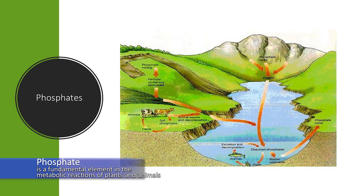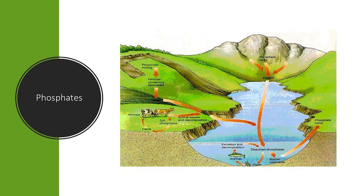Phosphate is a nutrient needed for plant and animal growth and is also a fundamental element in metabolic reactions. High levels of this nutrient can lead to overgrowth of plants, increase bacterial activity, and decrease dissolved oxygen levels. Phosphate comes from several sources, including human and animal waste, industrial pollution, and agricultural runoff.